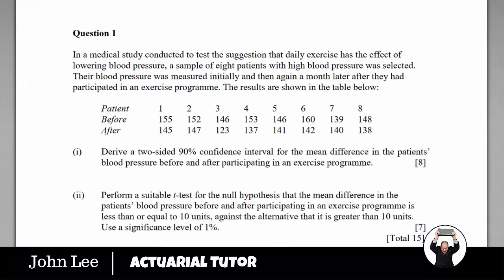Now we're asked to derive a two-sided 90% confidence interval for the mean difference in the patient's blood pressure before and after. The key thing to pick up here is it's the same patient before and after, so we have what's called paired data.